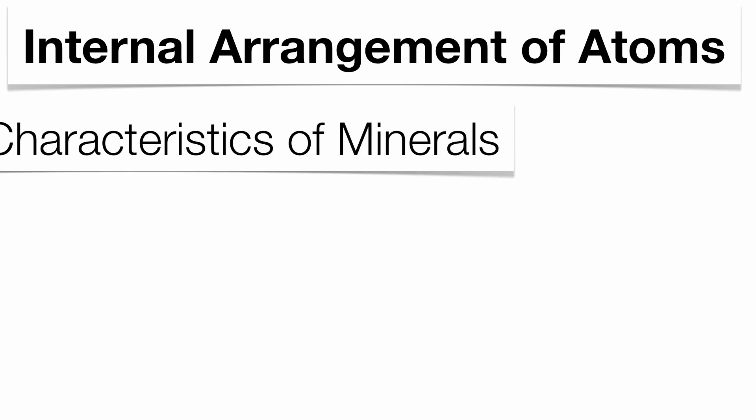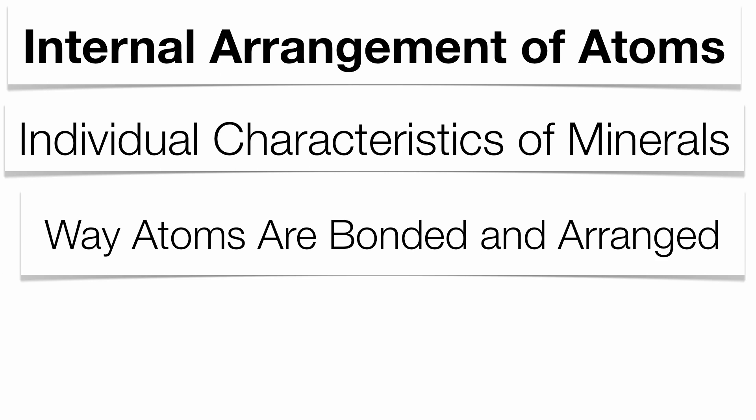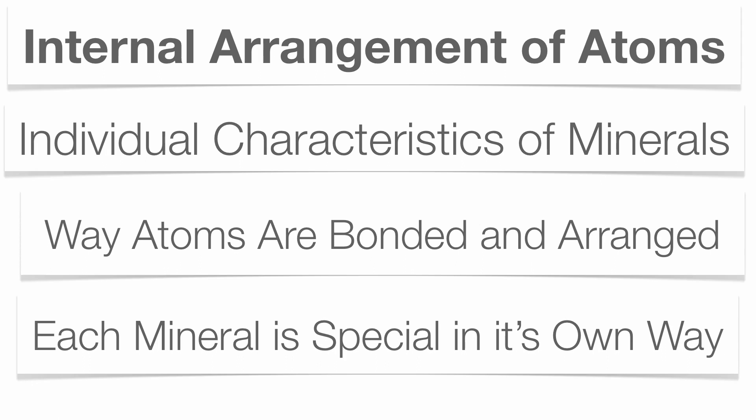Each mineral is special in its own way and is going to have its own individual characteristics. Quartz, pyrite, graphite, fluorite — they're all going to have their own individual characteristics, simply because of the way that the atoms have bonded themselves together. We call that the internal arrangement of atoms, and that arrangement within a mineral is unique to each individual mineral.